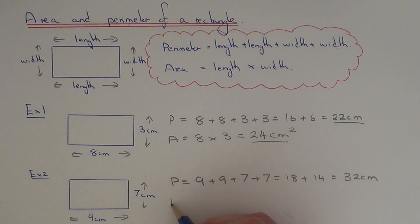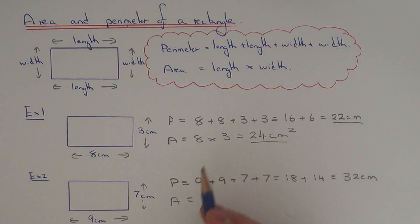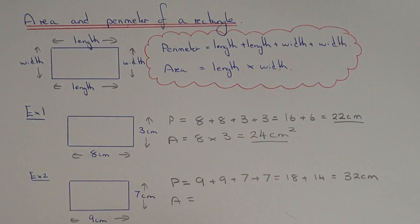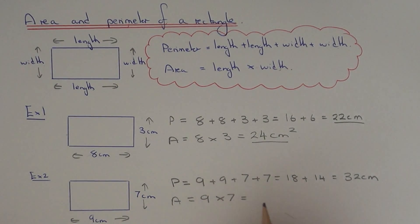So let's do the area next. With the area, you just need to multiply the length by the width. So the length is nine and the width is seven. So nine times seven will give you sixty-three centimetres squared.